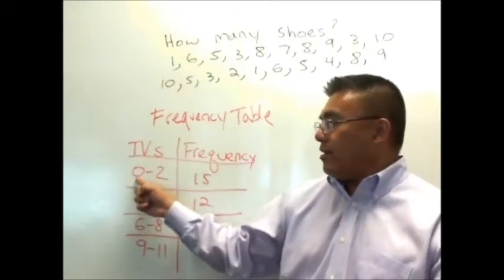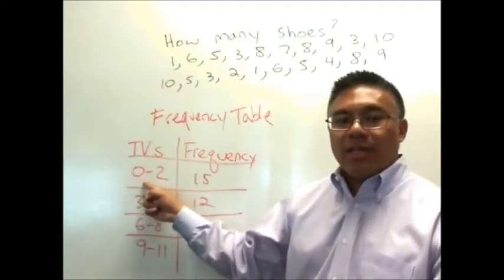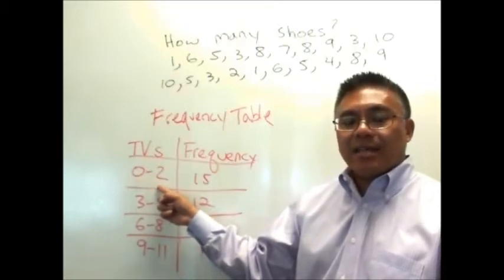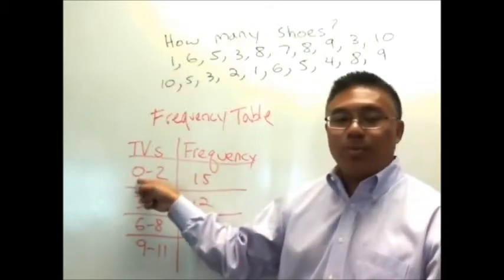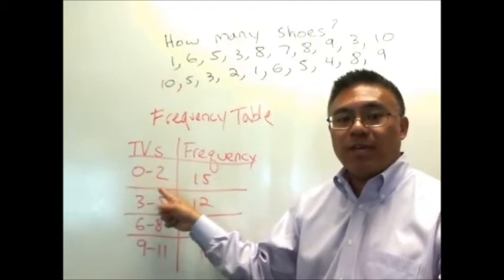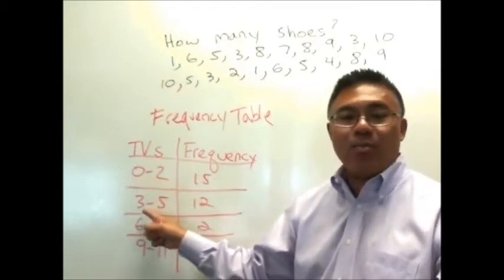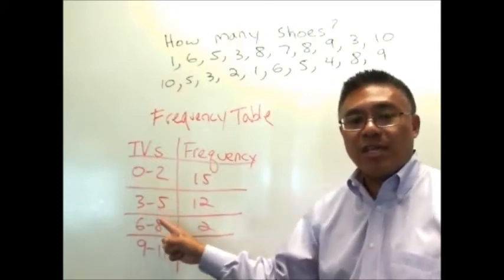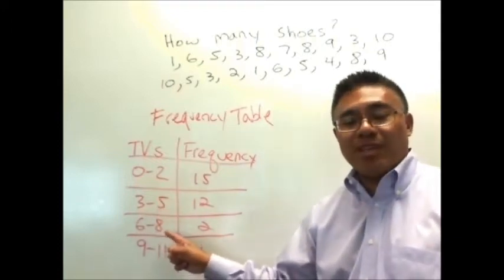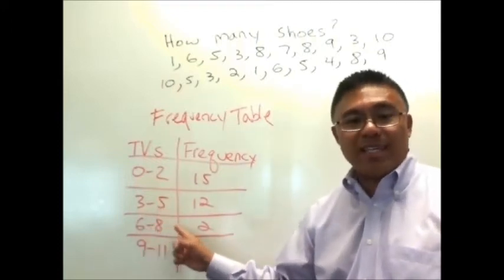Okay, and here in this side of the table is a class. This class is the people that said they own between zero to two televisions. Here is another class. This is a class of people that said they own between three to five televisions. This is the class people that said they own six to eight televisions, etc.